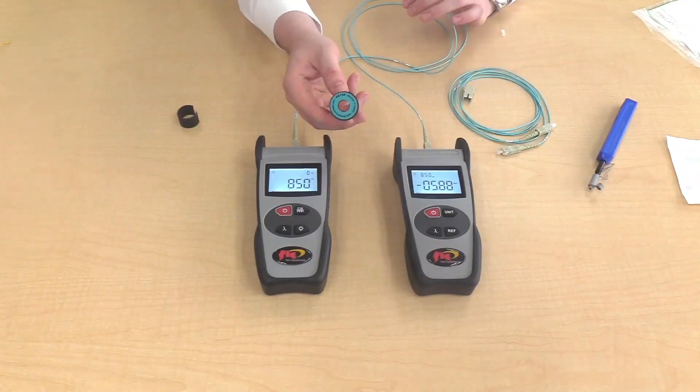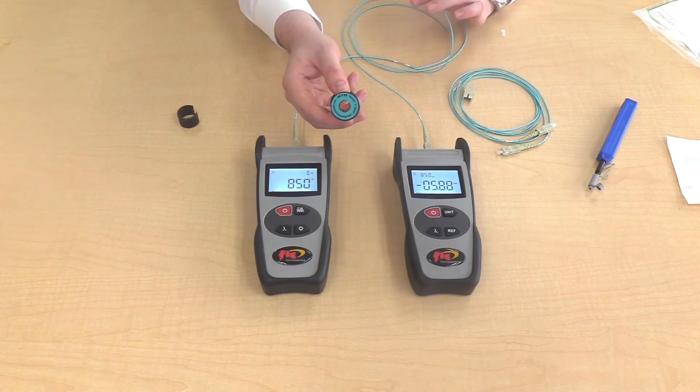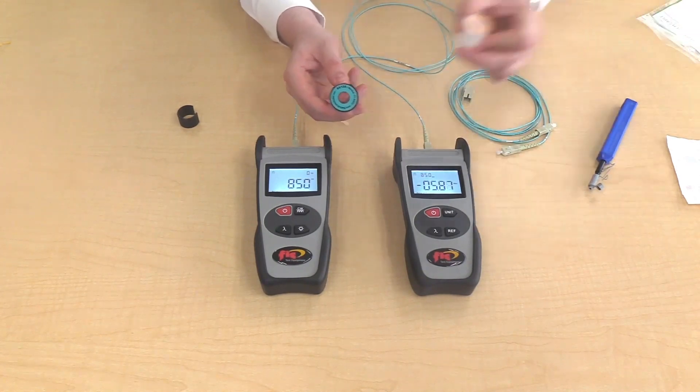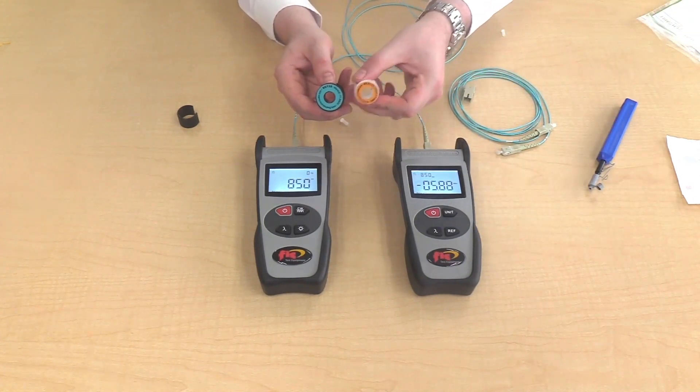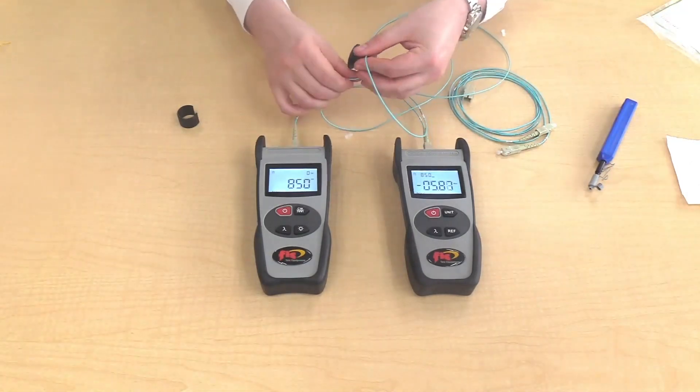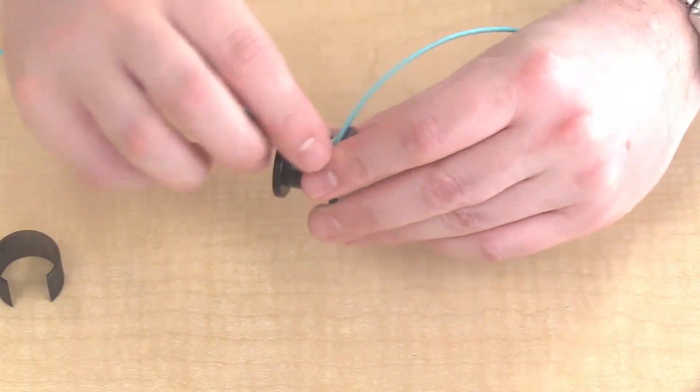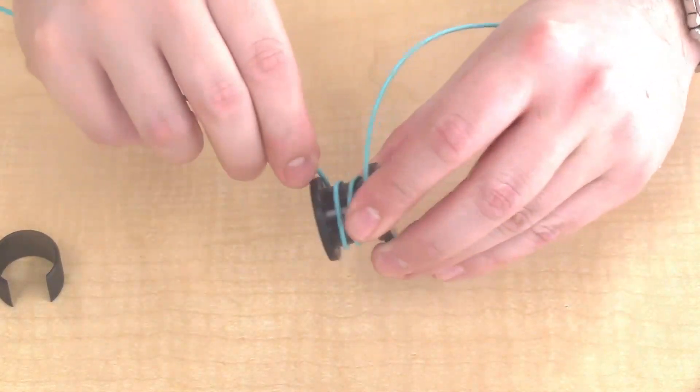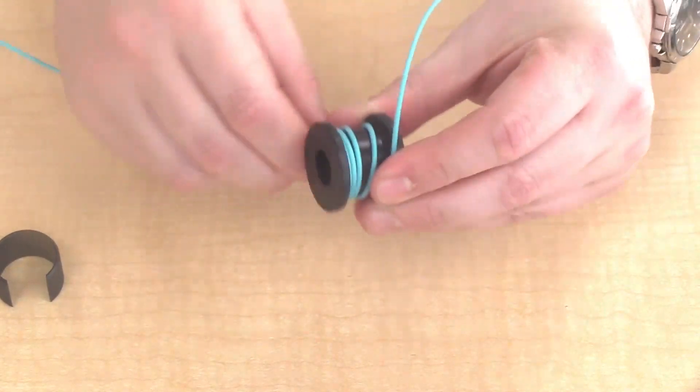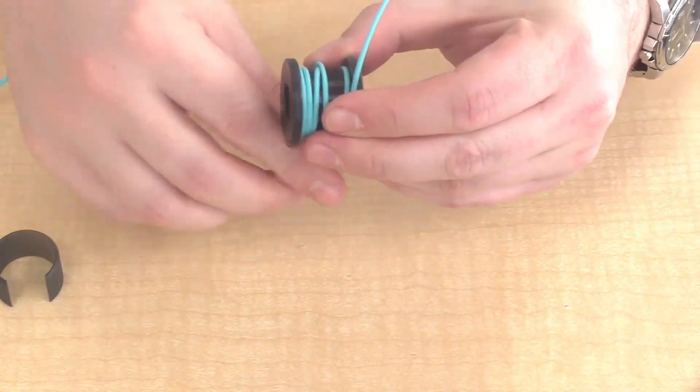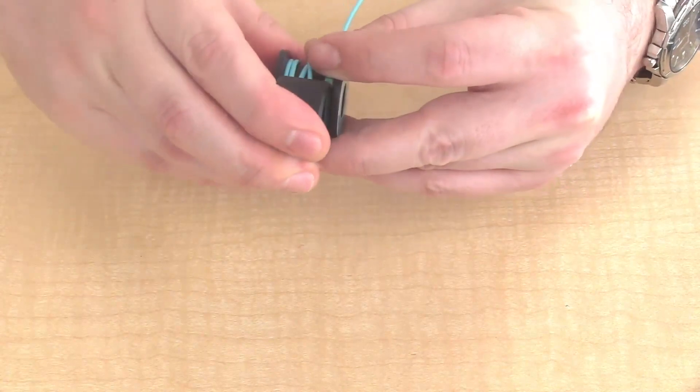For multi-mode testing only, you need to use a mandrel wrap. This mandrel is for 50 micron fiber. Also, there's a mandrel for 62.5 micron fiber. Wrap the cable 4 or 5 times. Take the clip and clip it into place.